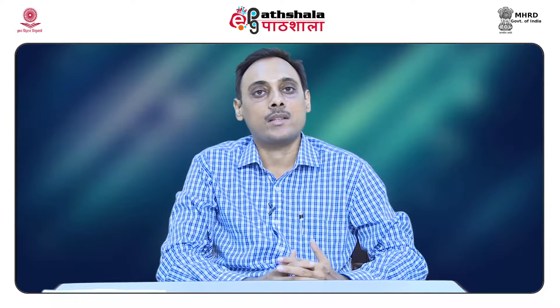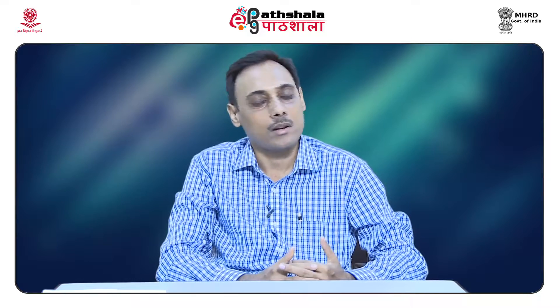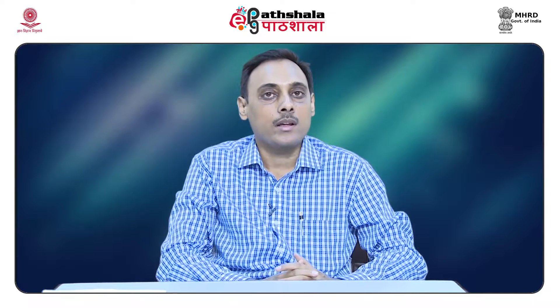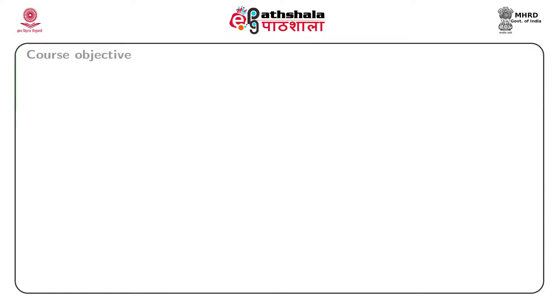We shall discuss finding the large sample joint distribution of different sample moments of different orders, with emphasis on finding the large sample distribution of the sample skewness measure. In this module we start with finding the large sample distribution of sample coefficient of variation, which is an application of the delta theorem discussed in our last module.